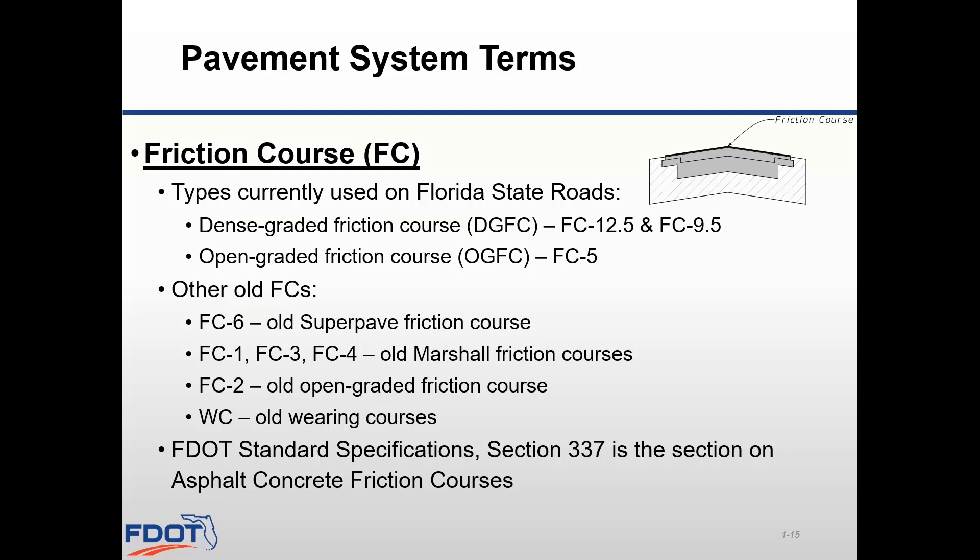The 1 inch lift of FC 9.5 tends to cool quickly in the field, which could make compaction difficult. However, there may be instances where it is the best solution — on some projects, this thinner lift may allow room for additional structural or overbuild lift without milling into the base or overlaying friction course into the gutter. Use prudent judgment and keep construction considerations in mind. Our other friction course, FC 5, is an open graded material placed only in a single 3/4 inch thick lift. FC 5 provides a skid resistant surface and the open graded texture allows rapid removal of water to reduce hydroplaning at higher speeds. We limit the use of open graded friction course to high speed facilities because slow stopping and turning movements cause this friction course to get shoved.